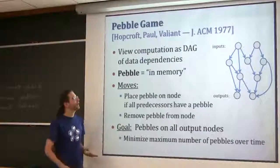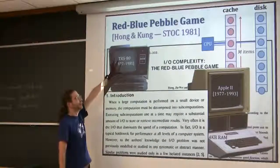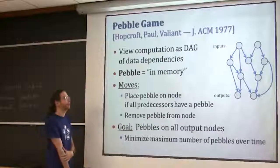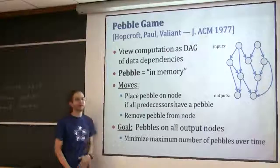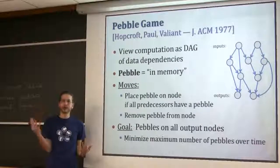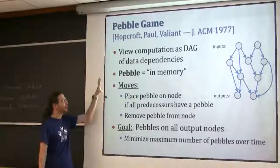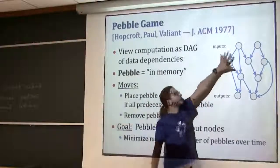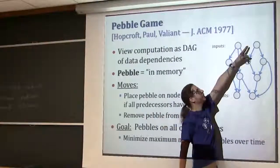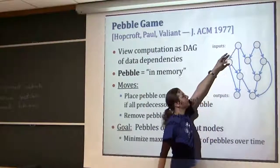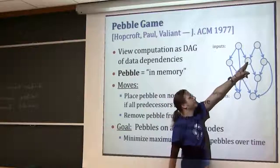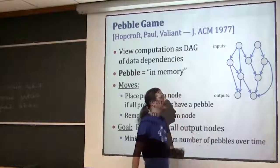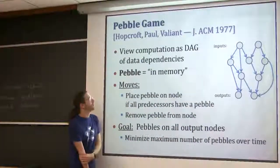Their model is based on a vanilla single-color pebble game model by Hopcroft, Paul, and Valiant - the famous paper on the interrelation between the time hierarchy and space hierarchy. Let's think of the algorithm we're executing as a DAG. We start with some inputs and we want to compute stuff that depends on having these values, and in the end we want to compute some outputs. So you can rewrite computation in this DAG form.